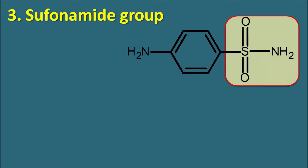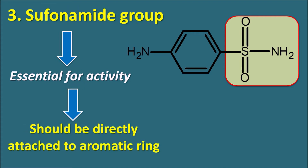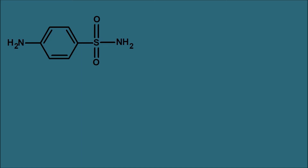The third part is the sulfonamide group. The sulfonamide group is essential for activity and should not be replaced with other groups like carboxylic acid or amide groups. It should be directly attached to the aromatic ring without any carbon between them. Generally aniline is a weak base, but the sulfonamide group acts like a weakly acidic group, resulting in ionization of the drug at physiological pH. The nitrogen of the sulfonamide group is therefore ionized at physiological pH.